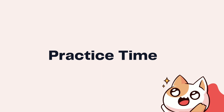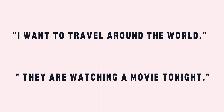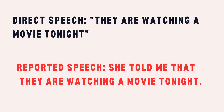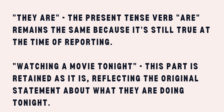Section 7: Practice time. To solidify your understanding, let's look at a few more examples together. Try transforming direct speech into reported speech with sentences like: 'I want to travel around the world' and 'They are watching a movie tonight.' In the first example, we change the pronoun 'I' to 'he' and adjust the verb tense from 'want' to 'wanted.' In the second example, in reported speech it becomes: they said that they are watching a movie tonight. Here, the present tense verb 'are' remains the same because it's still true at the time of reporting, and the rest is retained as is, reflecting the original statement.